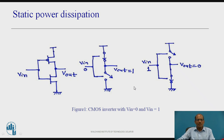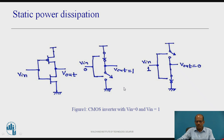In Static Power Dissipation, we see that only PMOS conducts or only NMOS conducts at a time, meaning there is no circuit completed from VDD to ground. We expect that the current drawn from supply to ground under steady state is 0, meaning static power dissipation is expected to be 0, but practically the static power dissipation is not 0.